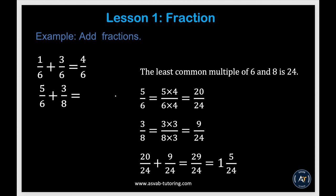Now we'll learn how to add fractions. The first thing you need to do is make sure the denominators are the same — find a common denominator. For 1 over 6 plus 3 over 6, the common denominator is 6, so just add the numerators: 3 plus 1 is 4 over 6. But for 5 over 6 plus 3 over 8, the denominators are different, so you have to find the least common multiple of 6 and 8, which is 24.